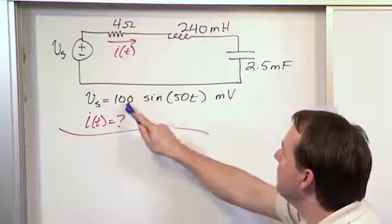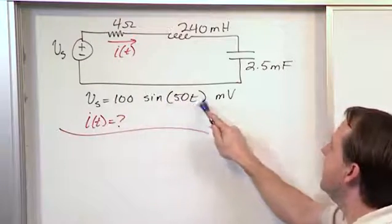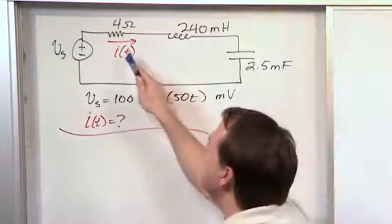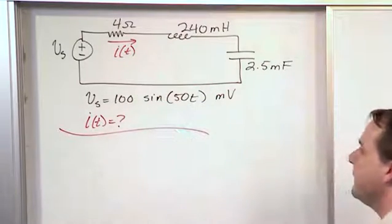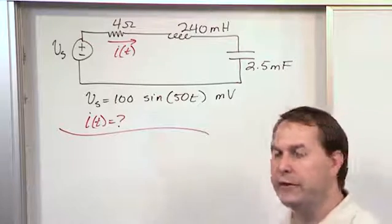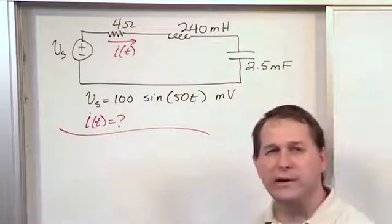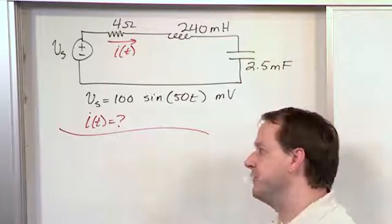The voltage source is given 100 times the sine of 50T in millivolts. What we want to do is find the current as a function of time running around this guy. Very common type of question, very simple really, but you have to have practice before you figure out that it's pretty simple.